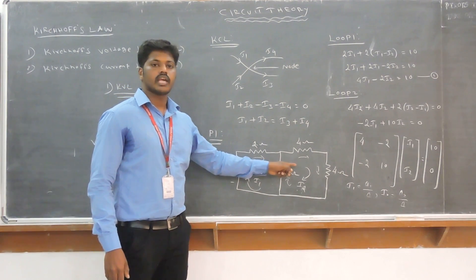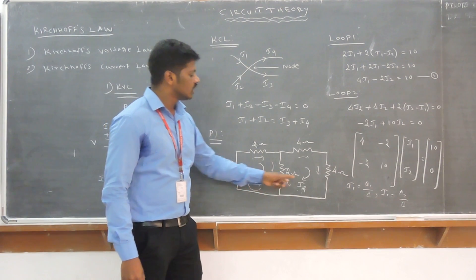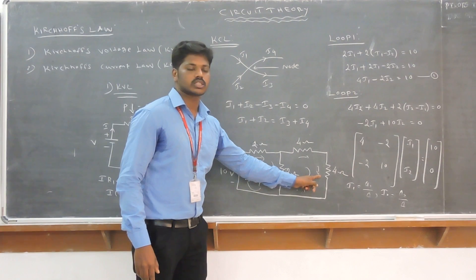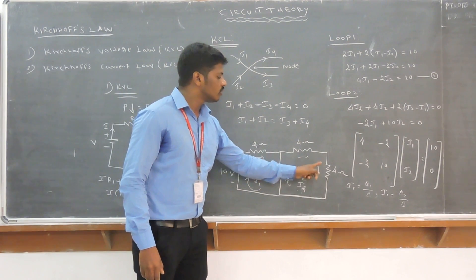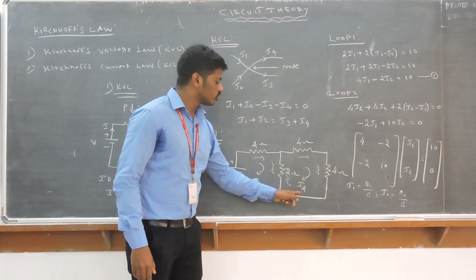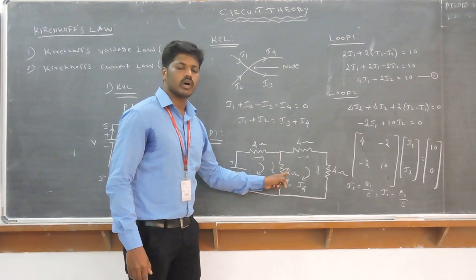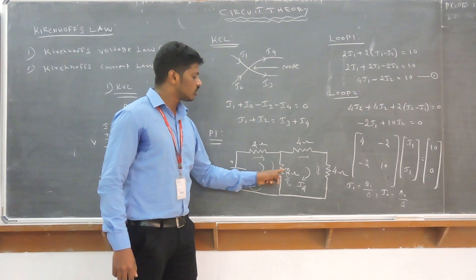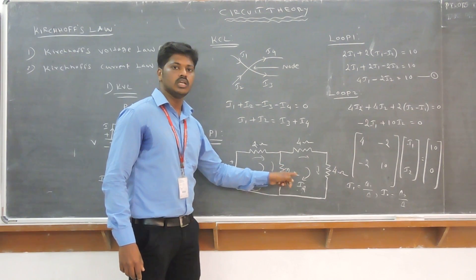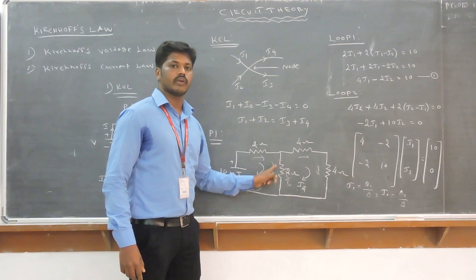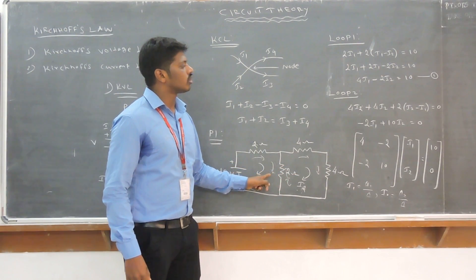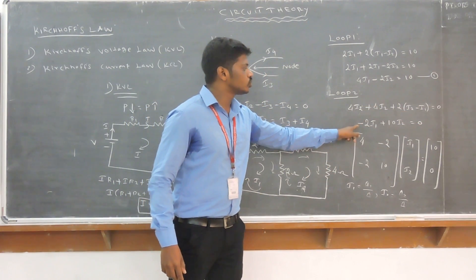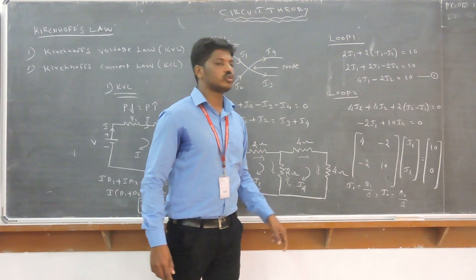Next, apply KVL to loop 2. The I2 current is flowing through the 4-ohm resistance and another 4-ohm resistance. Therefore, 4×I2 + 4×I2, plus the 2-ohm resistance shared between loop 2 and loop 1, gives 2×(I2 − I1). Simplifying: −2×I1 + 10×I2 = 0. That is equation number 2.